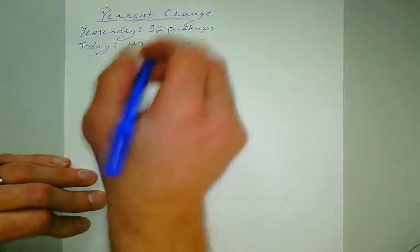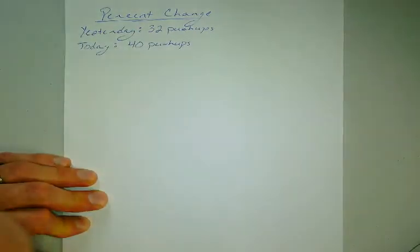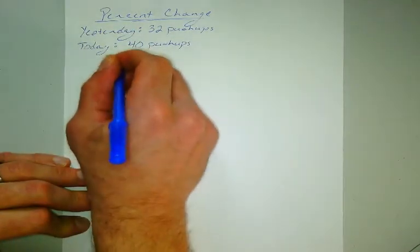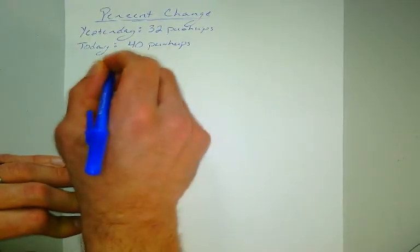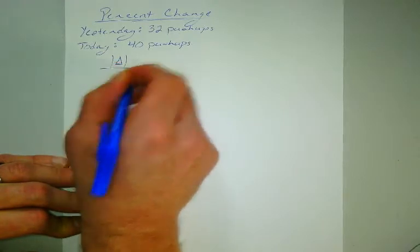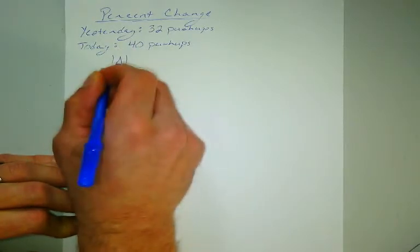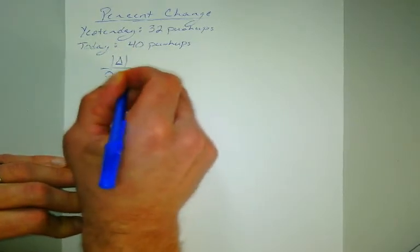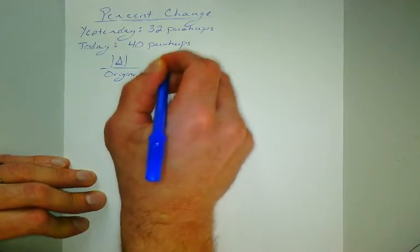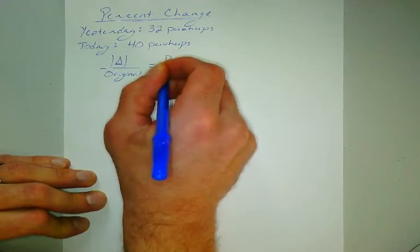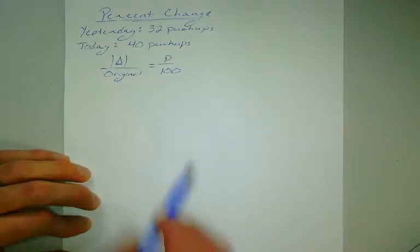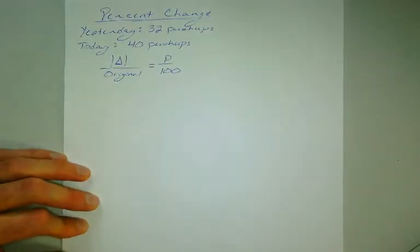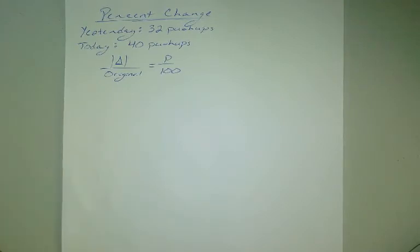So percent change, let's deal with the percent change proportion which is change. I'm going to use delta, the little triangle. I'm going to do the absolute value sign around that. So change over original equals percent. I'll call that p, all over 100. Because remember percents are parts out of 100. So we could just set up a proportion for any percent question.